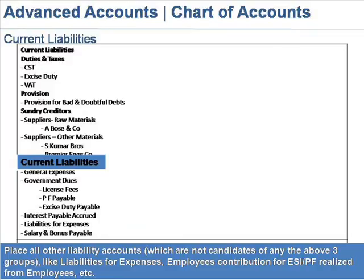Current Liabilities. Place all other liability accounts which are not candidates of any of the above three groups, like Liabilities for Expenses, Employees Contribution for ESI and PF, etc., realized from employees, etc.